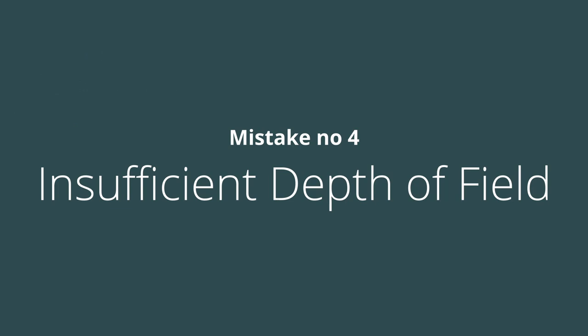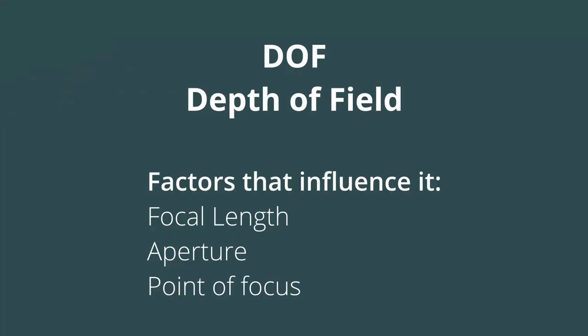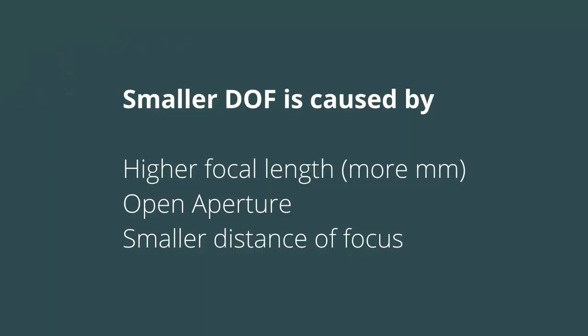Mistake number four: insufficient depth of field. The depth of field is the area in your photo where elements will be sharp. It is dictated by the aperture you're using, the focal length, and where you put your focus. The more millimeters — as focal length increases — the depth of field becomes smaller. When the aperture becomes wider, like f/1.8 or f/2.8, the depth of field also becomes smaller.